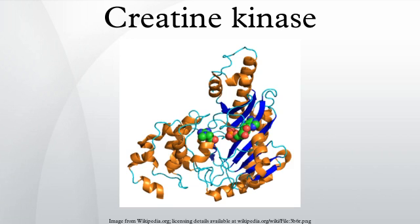This enzyme reaction is reversible, and thus ATP can be generated from PCr and ADP. In tissues and cells that consume ATP rapidly — especially skeletal muscle, but also brain, photoreceptor cells of the retina, hair cells of the inner ear, spermatozoa, and smooth muscle — PCr serves as an energy reservoir for rapid buffering and regeneration of ATP in situ, as well as for intracellular energy transport by the PCr shuttle or circuit. Thus, creatine kinase is an important enzyme in such tissues.